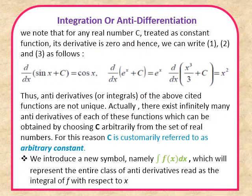We know that the differentiation of any constant is always 0. So the differentiation of sin x + c will be cos x, differentiation of e^x + c will be e^x, and differentiation of x³/3 + c will be x². So the anti-derivative of these examples is not unique. We have to add constant c to the integral. I can conclude that there exist infinitely many anti-derivatives of each function, and we must compulsorily write c in the final answer. This c is called the arbitrary constant.